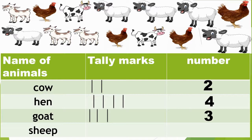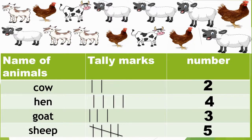Now we will count the number of sheep: 1, 2, 3, 4, 5. I will draw 1, 2, 3, 4 standing lines and a cross line to make a group of 5. The number is 5.